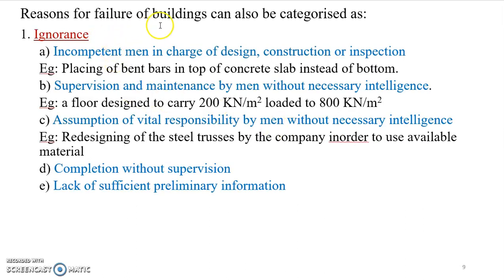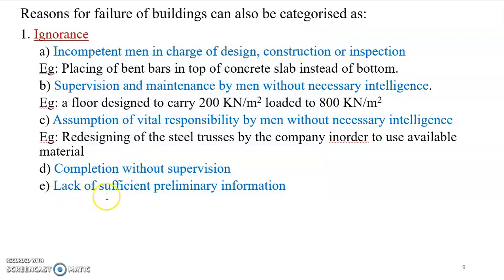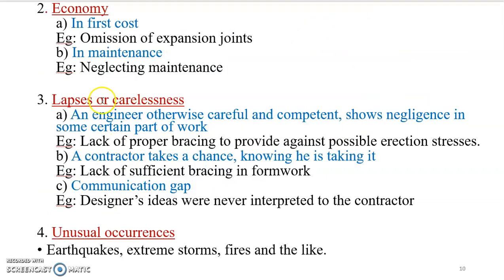Reasons for the failure of buildings can also be categorized. First: ignorance — including incompetent men in charge of design, construction, or inspection; supervision and maintenance by men without the necessary intelligence; assumption of vital responsibility by men without necessary intelligence; completion without proper supervision; and lack of sufficient preliminary information.